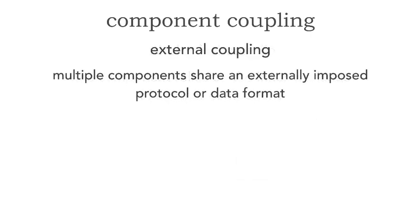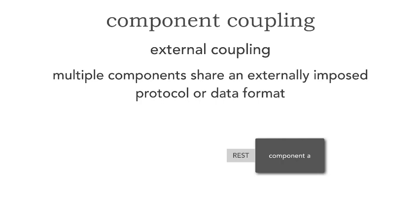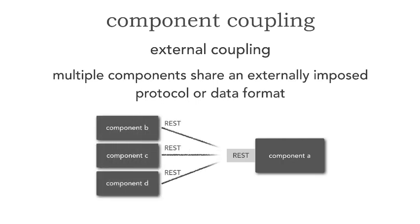Going down the levels now to external coupling. External coupling says that multiple components share an externally imposed protocol or data format. For example, here's component A that exposes its endpoints through REST, and then we have components B, C, and D that all have to access that component with REST. In microservices, for example, we always have external coupling. But watch this — component A changes its endpoints to SOAP, and effectively I have broken every single service and every single component or application that is talking to me. The question is: do I know all of those components, all of those services that are invoking me? And generally I don't, which makes this a really tight level of coupling.